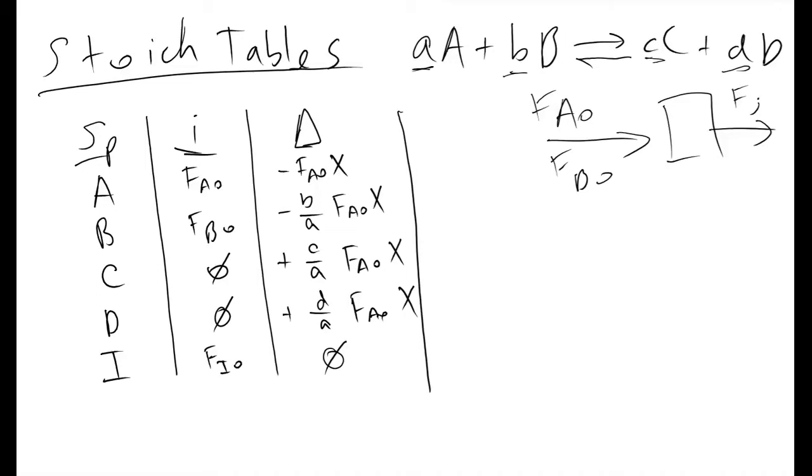If we are working with a batch stirred tank reactor, instead of working with molar flow rates, we'll be working with simply the number of moles. For BSTRs, all we do is switch F sub i with N sub i. And that's the only difference.